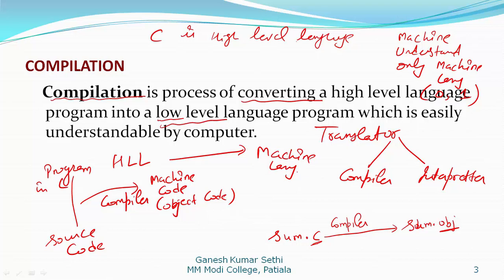Similarly, there are certain languages which have an interpreter. The basic difference between compiler and interpreter is: if our program is 10 lines, a compiler converts all 10 lines at once into machine code, whereas an interpreter converts and executes the program line by line. The detail about compilation and interpreter will be discussed in computer fundamentals.